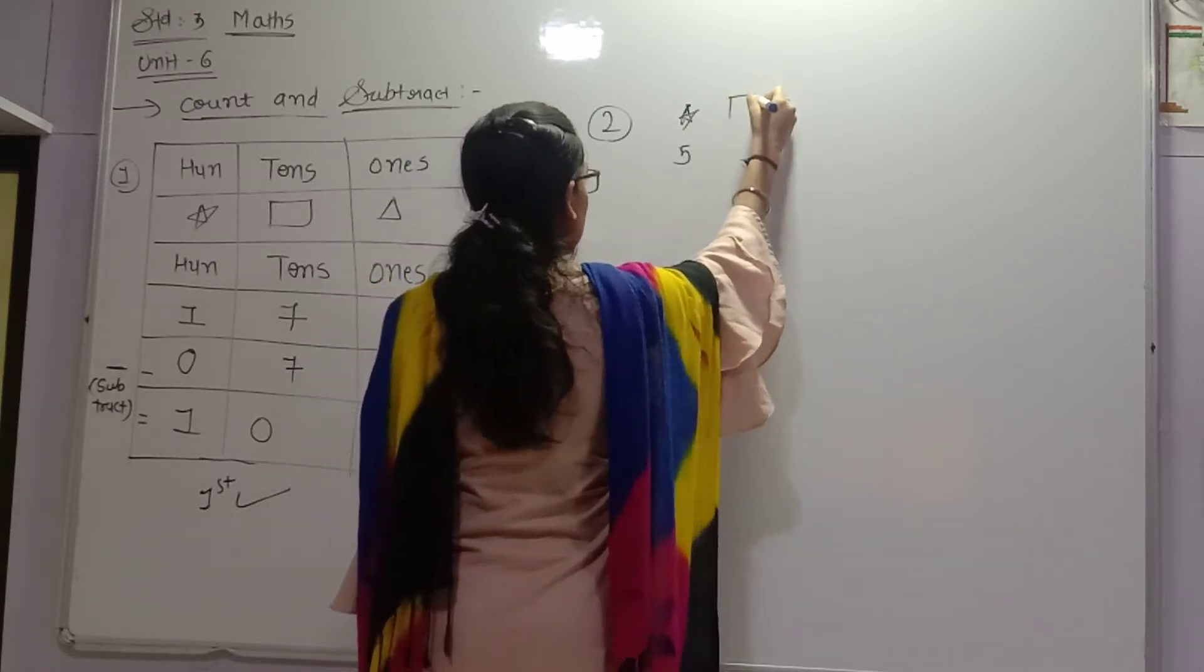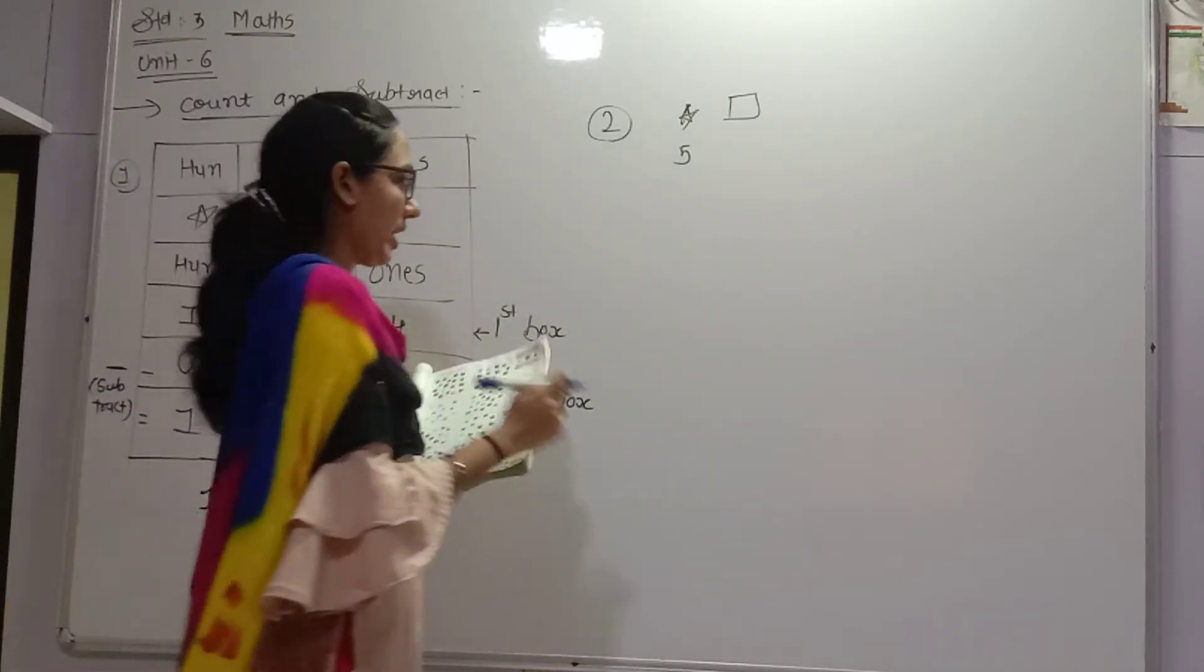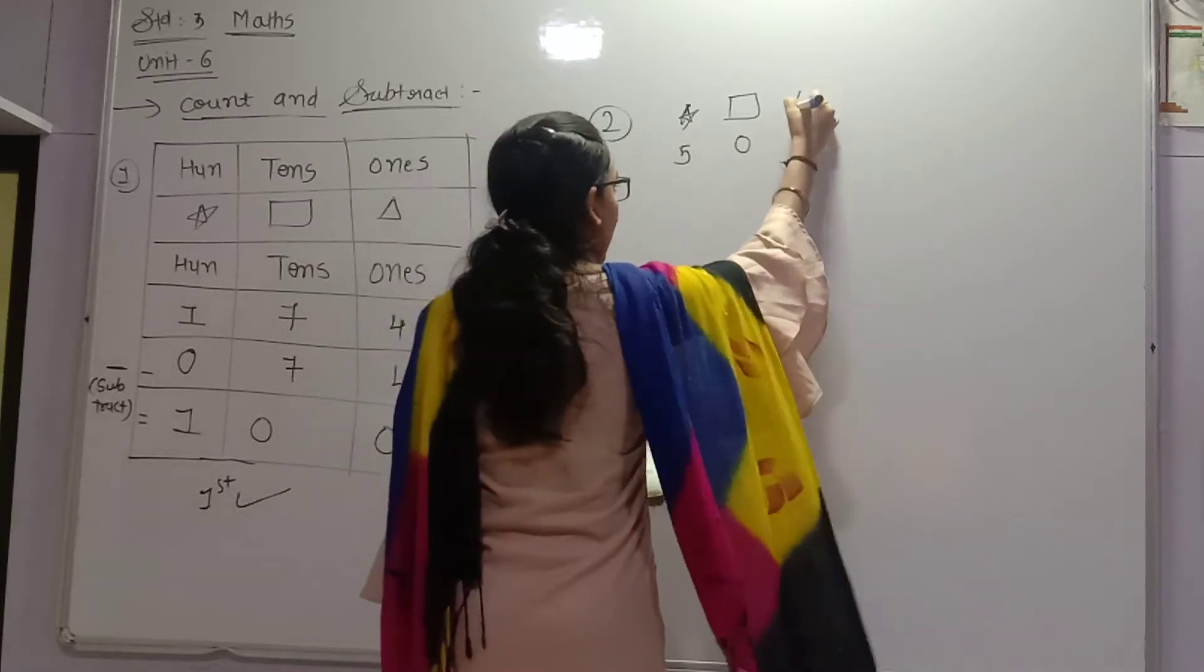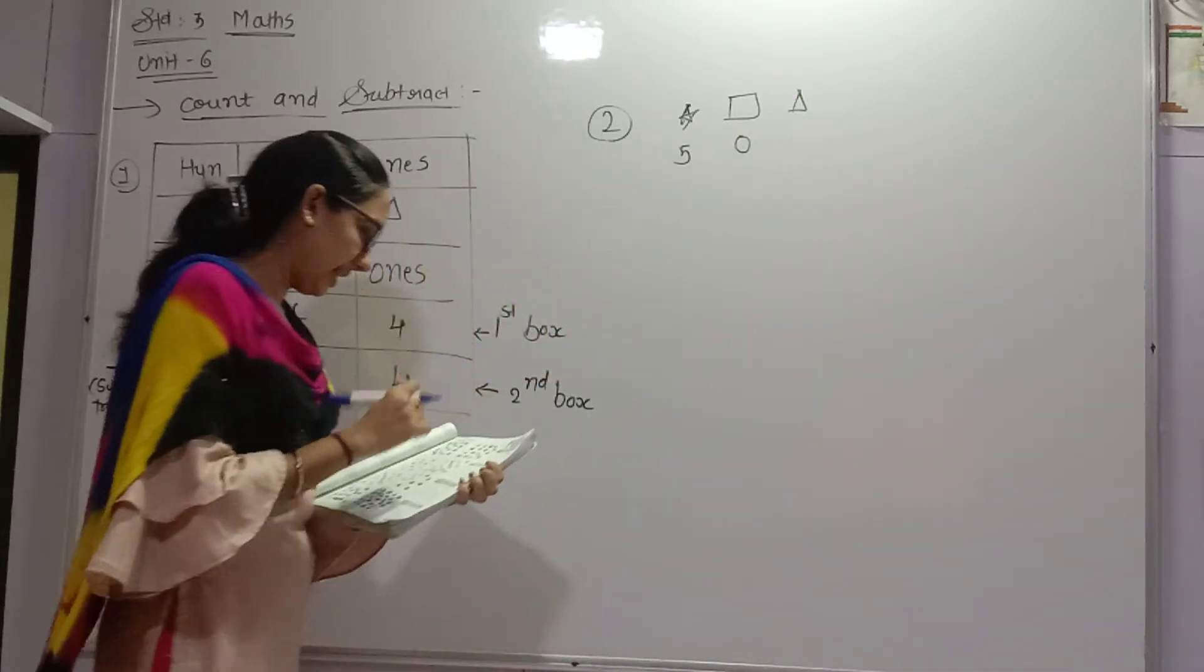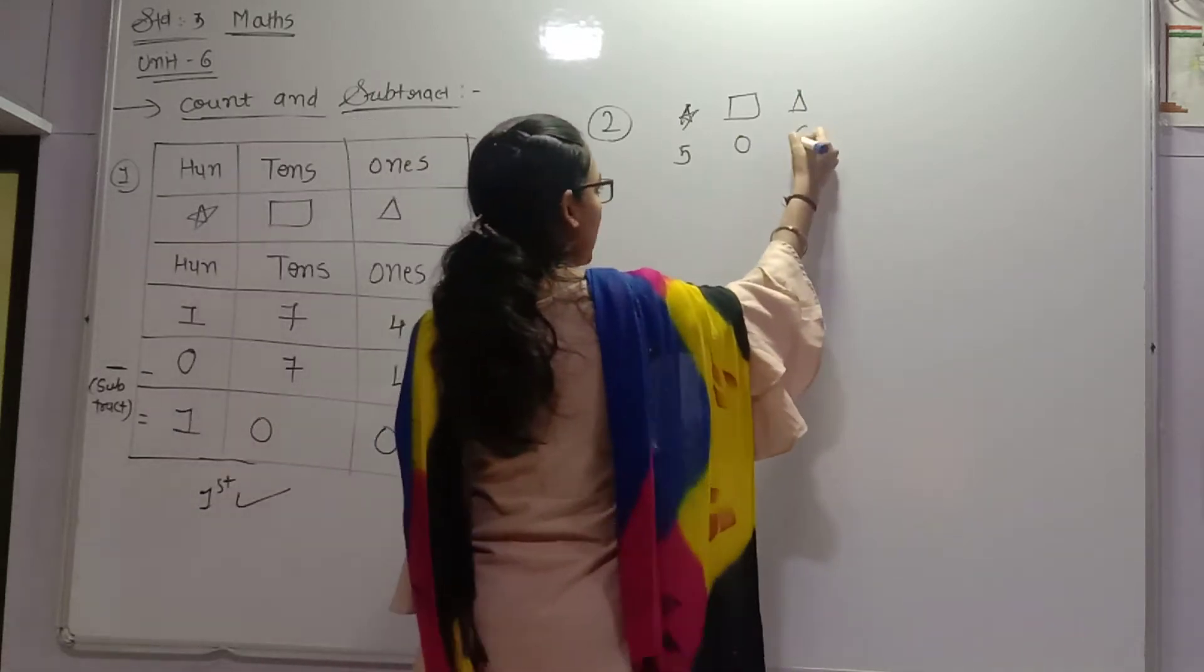First, we have to give a square. Square, there is no square, so 0. Or triangle. Triangle: 1, 2, 3, 4, 5, 6. So 6, right?